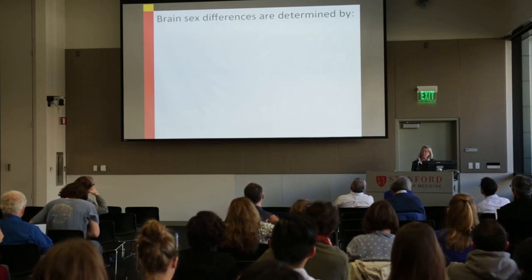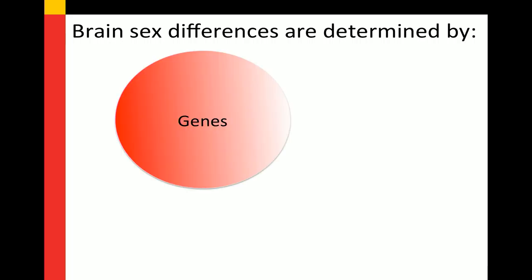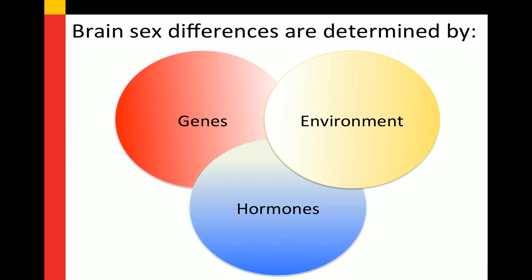I'm going to frame my talk in the context of: what are the basic mechanisms of establishing sex differences in the brain, and what does that mean in terms of disease susceptibility? Your brain has sex differences that are determined by three factors: your genes — XX versus XY — your environment, how you're raised, how your parents teach you, and your hormones, which I would argue reigns supreme, but there are certainly other contributions.